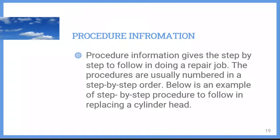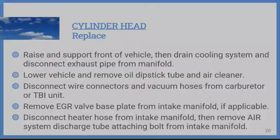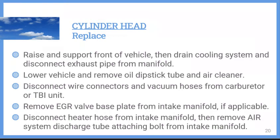Next is procedure information, which gives the step-by-step instructions to follow in doing a repair job. Procedures are usually numbered in order. Here is an example of a step-by-step procedure for replacing a cylinder head: raise and support the front of the vehicle, drain the cooling system, disconnect the exhaust pipe from the manifold, lower the vehicle, remove the oil dipstick tube and air cleaner, disconnect wire connectors and vacuum hoses from the carburetor or TBI unit, and remove the EGR valve base plate from the intake manifold if applicable.